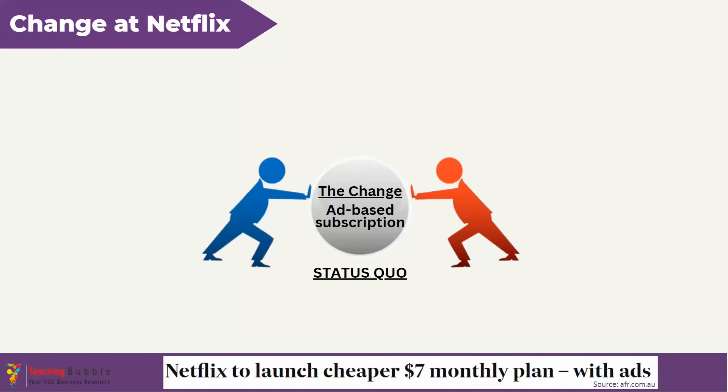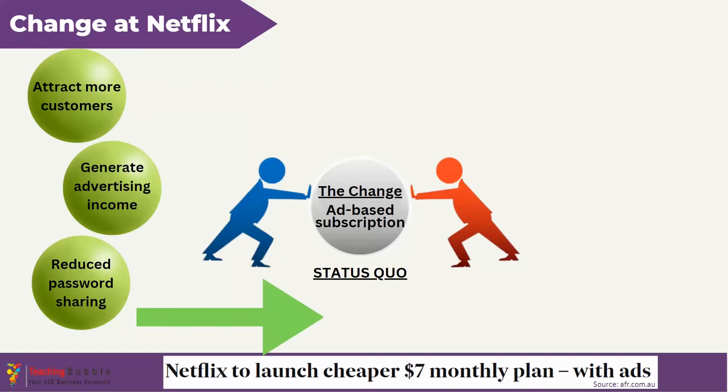The first step is to identify the driving and restraining forces. Examples of driving forces for Netflix could include a potential to attract more customers due to the lower price, especially amidst rising living costs in many countries, making Netflix more accessible to those who previously couldn't afford a subscription. A new plan also enables the company to generate advertising income from advertisers and could potentially reduce password sharing, which has been an issue since its inception.